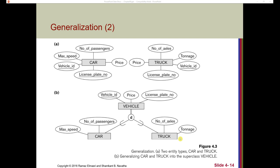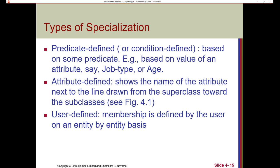We can classify different types of specialization. First, predicate-defined or condition-defined specialization is based on some predicate — for example, based on the value of an attribute like job type or age. If all subclasses in a specialization have the membership condition on the same attribute of the superclass, then the specialization is referred to as an attribute-defined specialization, and the attribute is called the defining attribute. When we do not have a condition for determining membership in a subclass, then the subclass is called user-defined, specified by the user on an entity-by-entity basis.